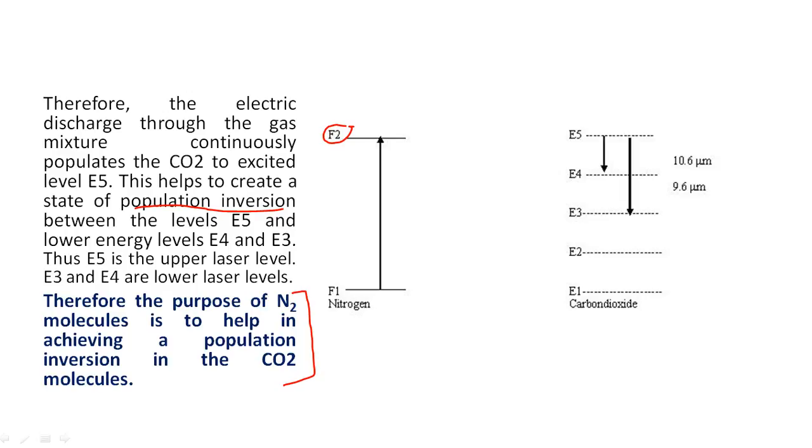This is the main purpose of nitrogen molecules: to excite the carbon dioxide molecules, because the electrical pumping—collision of fast-moving electrons with CO2—will not excite the CO2 to the upper levels. This is the indirect method to excite the carbon dioxide molecules to the upper level.